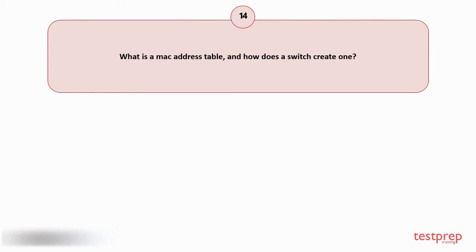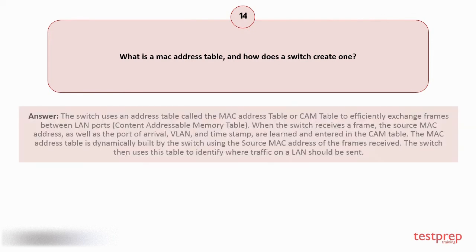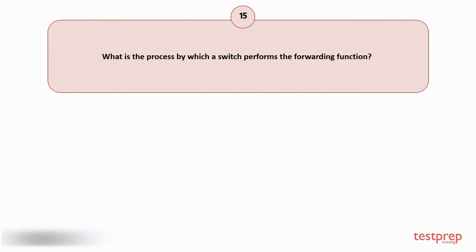Question number fourteen: What is a MAC address table and how does a switch create one? Your answer is: The switch uses an address table called the MAC address table, or CAM (Content Addressable Memory) table, to efficiently exchange frames between LAN ports. When the switch receives a frame, the source MAC address, port of arrival, VLAN, and timestamp are learned and entered in the CAM table. The MAC address table is dynamically built using the source MAC address of frames received, and the switch uses this table to identify where traffic on a LAN should be sent.